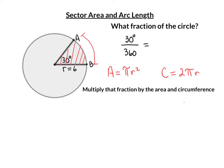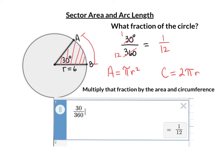In this case, that fraction is 30 over 360. Both of these divide by 30 — we get 1 and 12. So 30/360 is just 1 twelfth of the circle. Some fractions are more difficult to reduce. Remember that you can always use Desmos — plug it in and hit the fraction button, this little circle bar right here, and it will reduce the fraction for you.